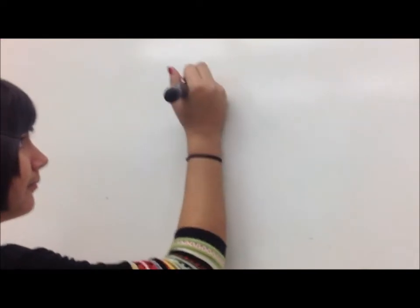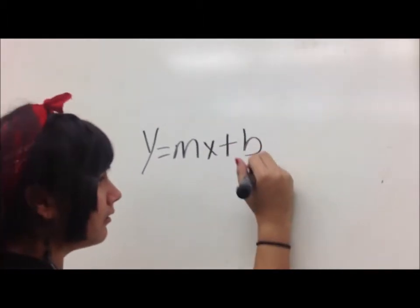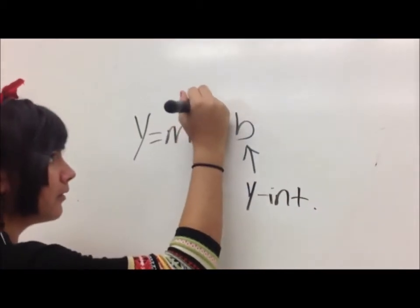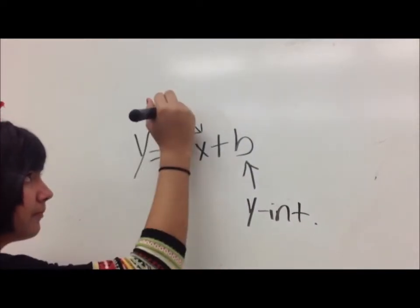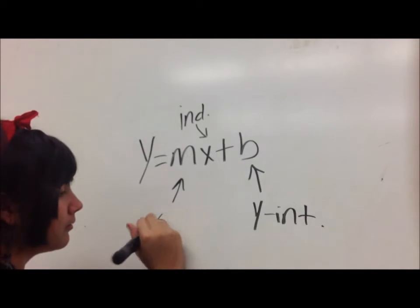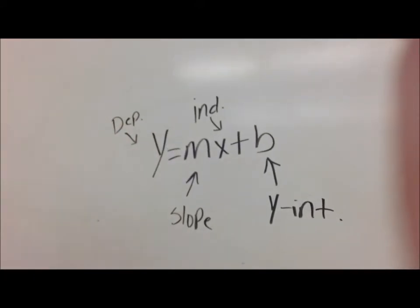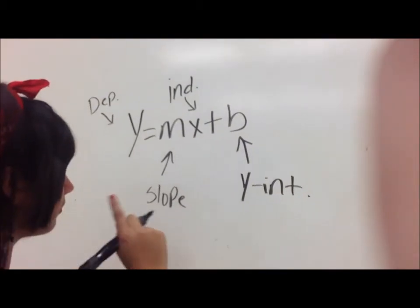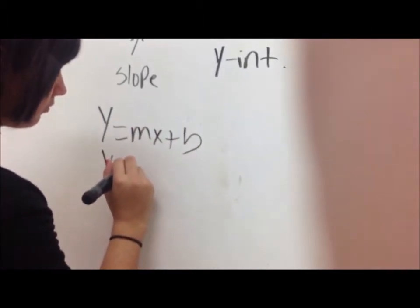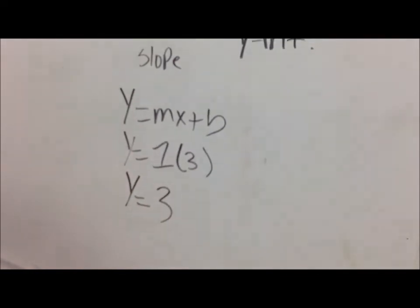Okay, so here's an example. y equals mx plus b — that's the formula we use to find the equation, or the answer. b equals the y-intercept, and x is the independent variable. m is the slope, and y is the dependent variable. That's what all the variables mean in this formula. Now here's another example: y equals mx plus b. You replace those with y equals one times three, and you get your answer, which is y equals three.